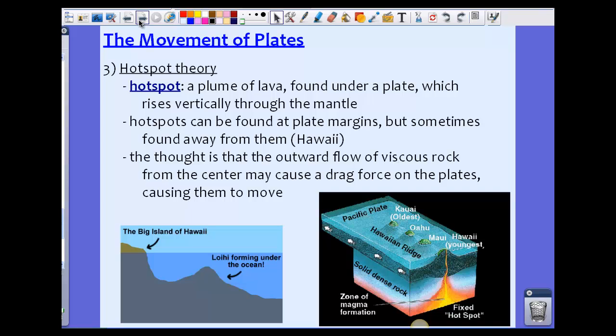Hot spots can be found at plate margins, near the edges, but we really find them away from them. Think of Hawaii as an example. Hawaii is in the middle of the Pacific plate. Also, we have Yellowstone. Yellowstone is a huge hot spot that sits underneath the North American plate, underneath the middle of our own country.